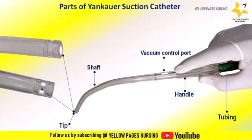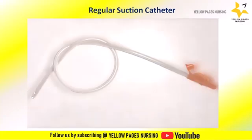The Yankauer catheter may also have a vacuum control port integrated into the handle, which helps to adjust the suction pressure.